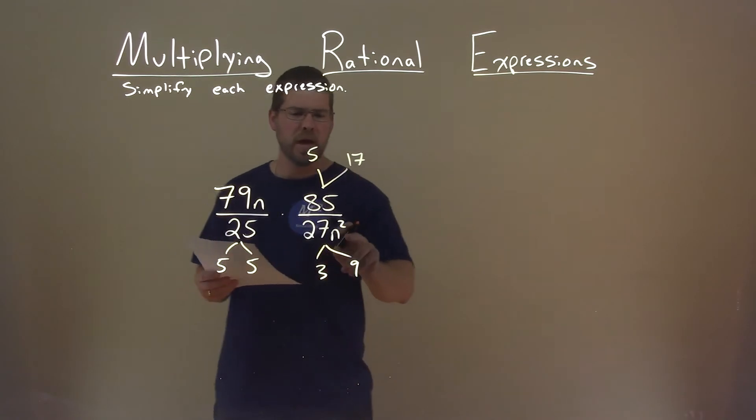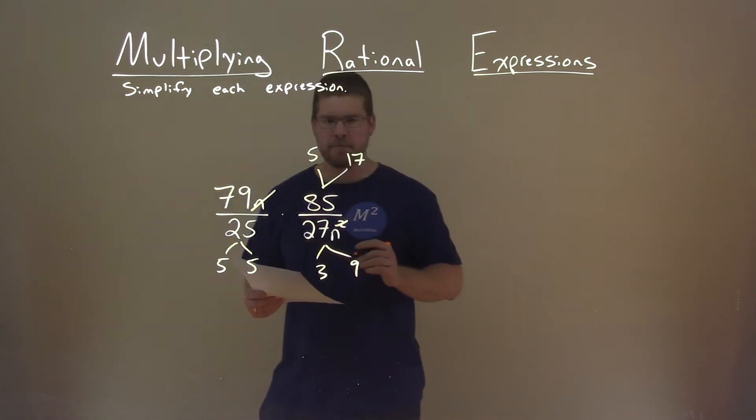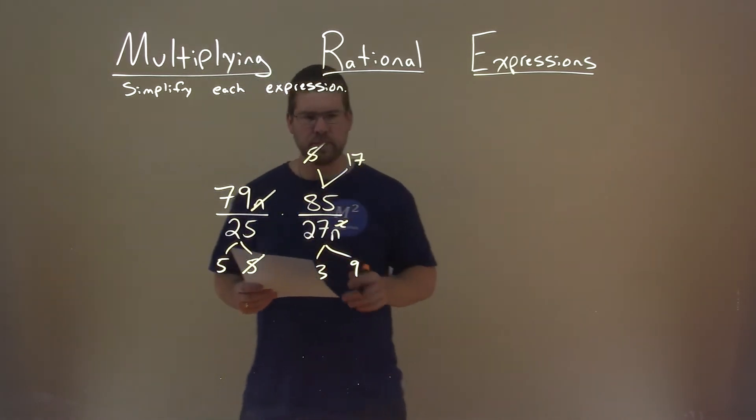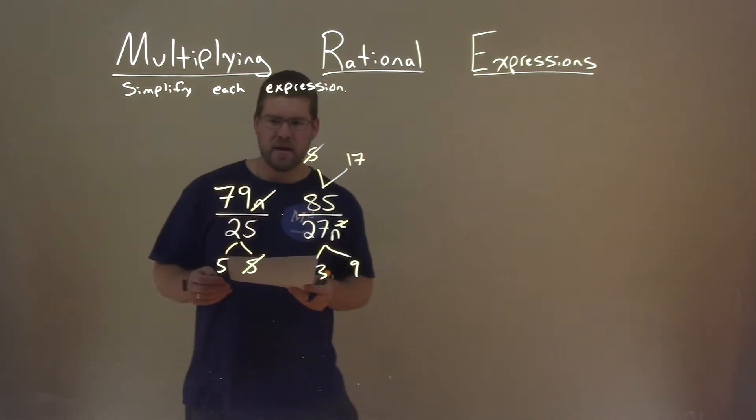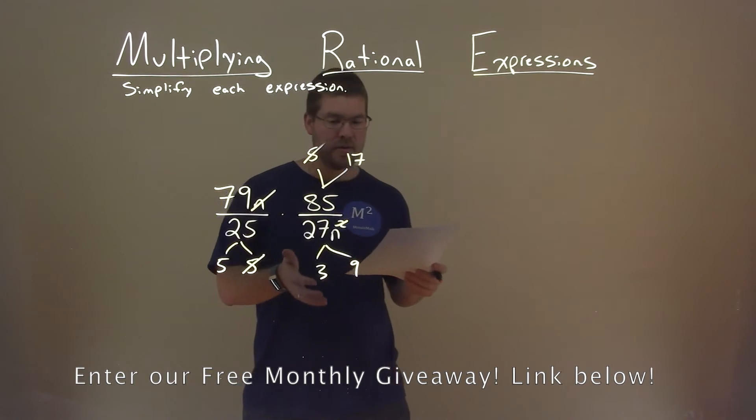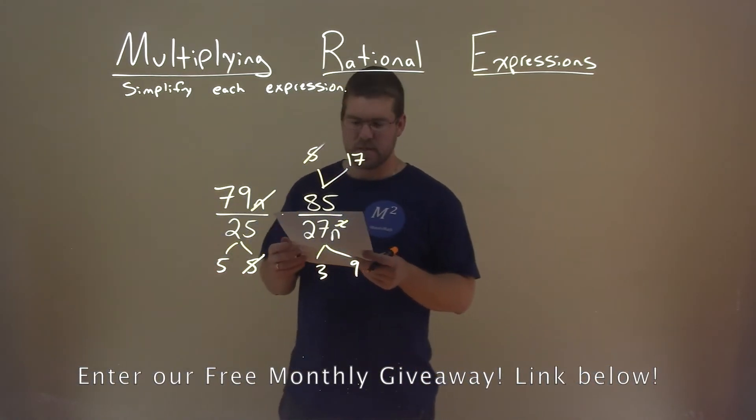Okay. Well, n squared is n times n. We got one n here. So if we get rid of that squared, we can get rid of that n. We can cancel out a 5 in the denominator and 5 in the numerator. We'll cancel out. And I'm not seeing anything else I can really cancel out here. Nothing else really simplifies. I mean, there's 9. I can break down to 3 times 3, but kind of pointless there.